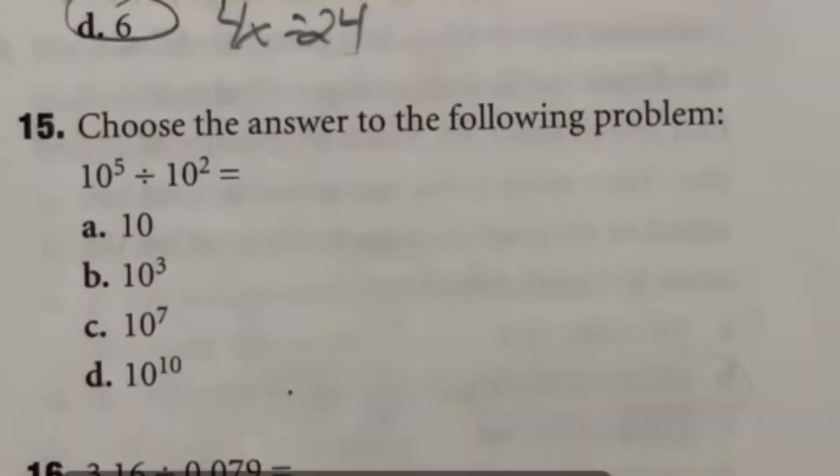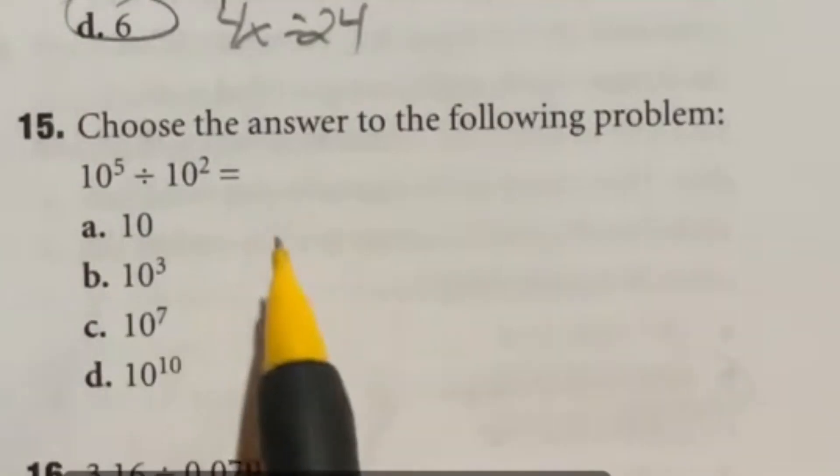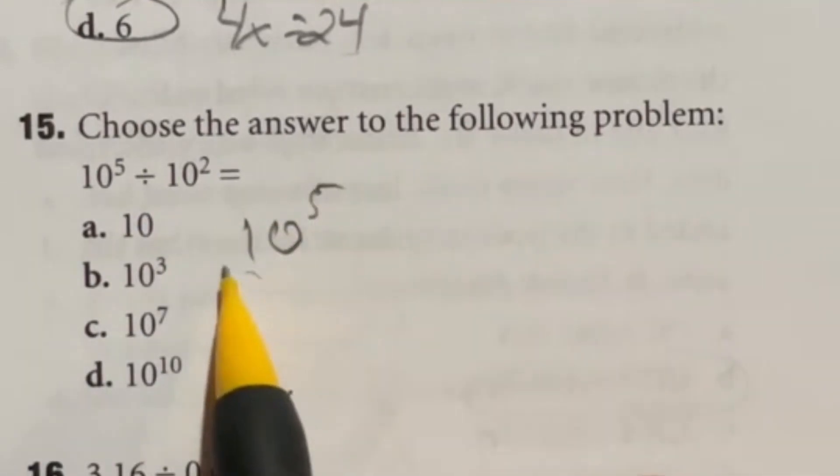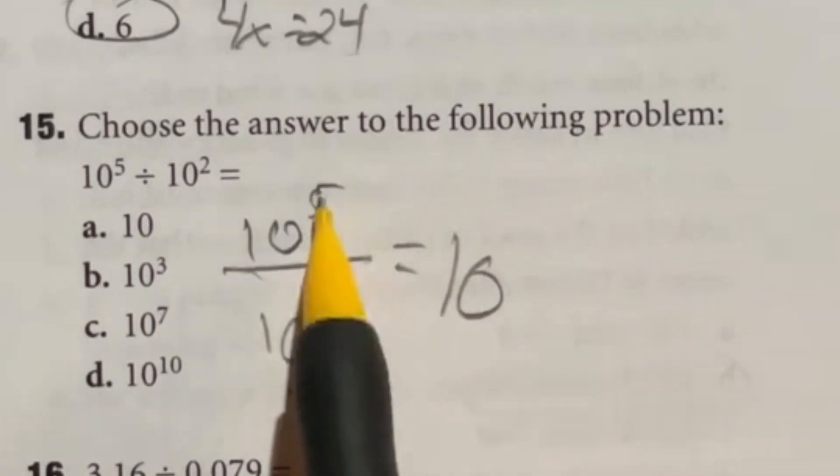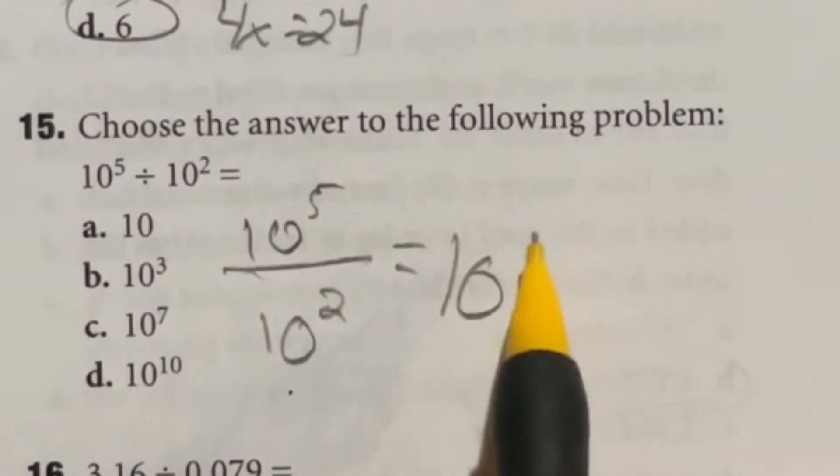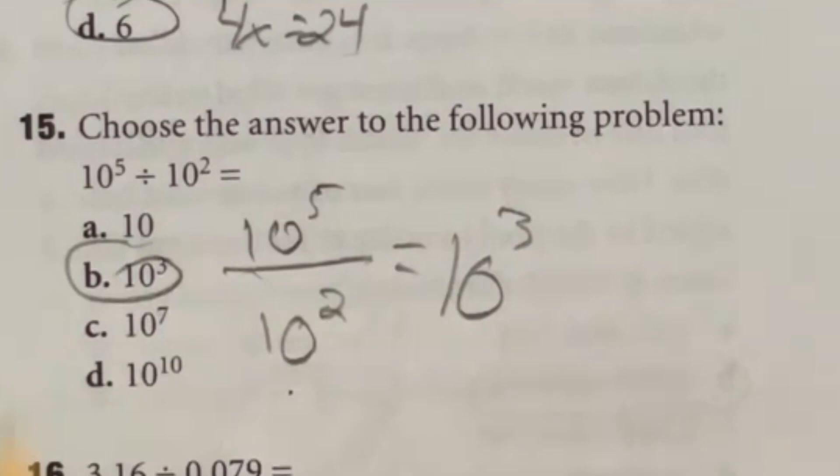For number 15, we're going to use something in the exponent rules category here. If you didn't know, if you are dividing two numbers with an exponent, if you have the same base for both of them like we do in this case, then you can just subtract the exponents to get your final answer. So I still bring the 10, but 5 minus 2 is going to give me 3. So that means our final answer here is B.